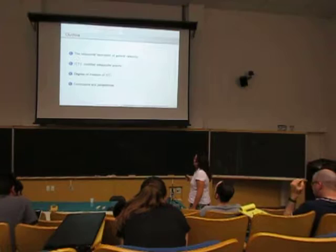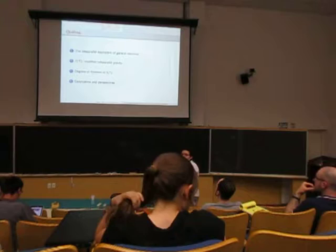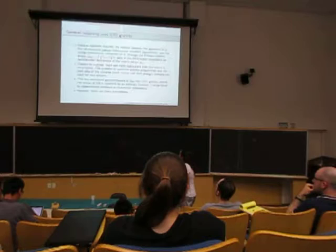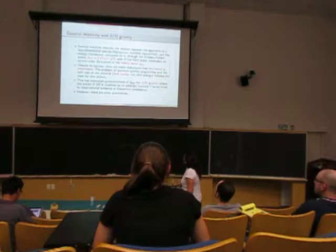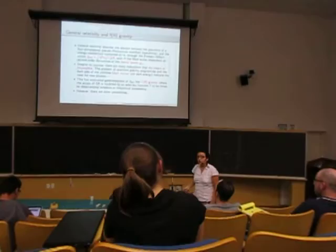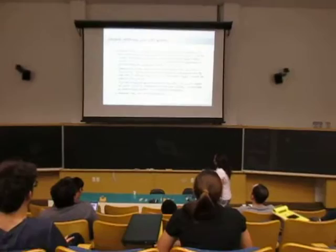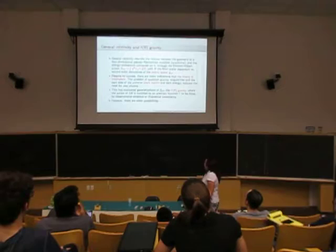I need to explain a little what is this all about, the teleparallel equivalent of general relativity, then I'm going to introduce the modified gravity and talk about the degrees of freedom. As you all clearly know, general relativity is described by the metric field through the Einstein-Hilbert action, where this R is the Ricci scalar that is dependent on second-order derivatives of the metric tensor. Despite the success of general relativity, there are many indications that this theory is incomplete. The problem of quantum gravity, singularities, and the dark side of the universe, including dark matter and dark energy, all these problems indicate that we need new physics.